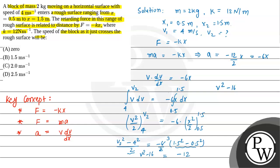v2 square minus 16 equal to minus 12. So v2 square will be 4, and v will be equal to square root of 4. And this is in meter per second. So finally velocity will be 2 meter per second. And this velocity is basically v2.